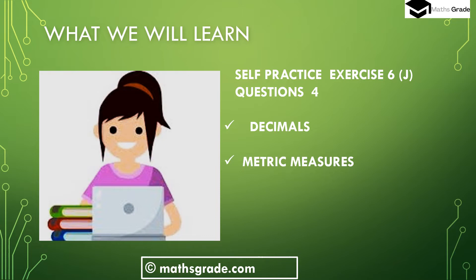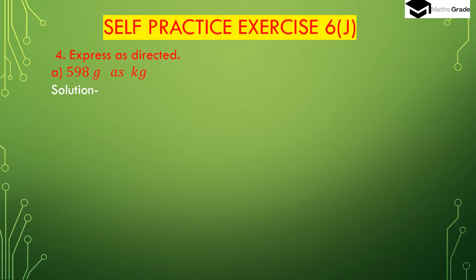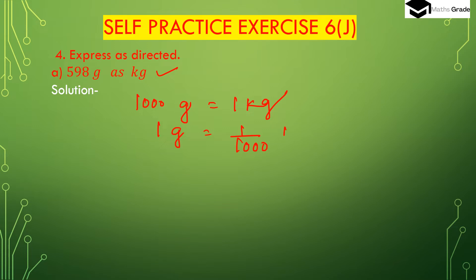Let's solve some questions now. Question number 4, express as directed. First, we take 598 grams as kg. We have to convert 598 grams to kg. kg means kilogram. We know 1000 grams is 1 kg, so 1 gram will be 1 divided by 1000 of kg. So 598 grams — we have to multiply 1 divided by 1000 with 598.